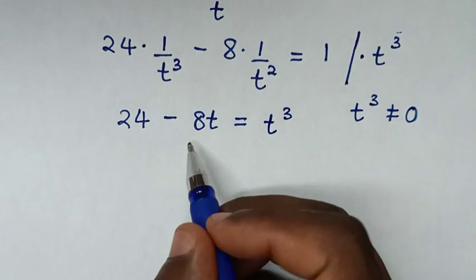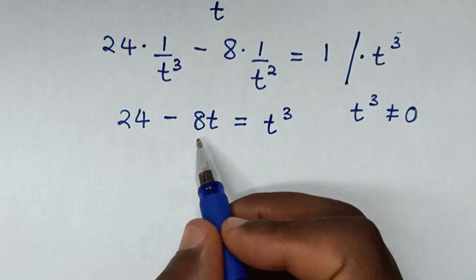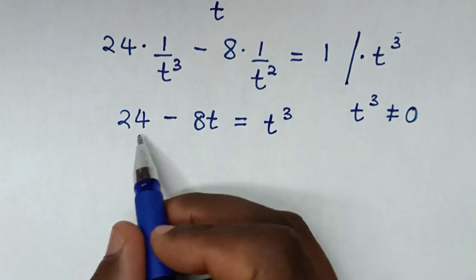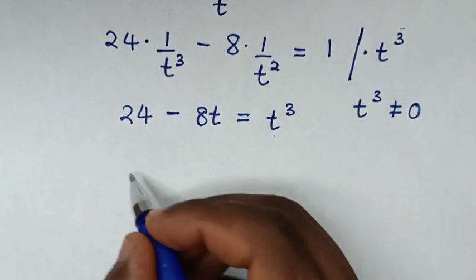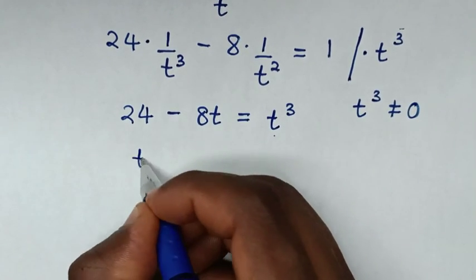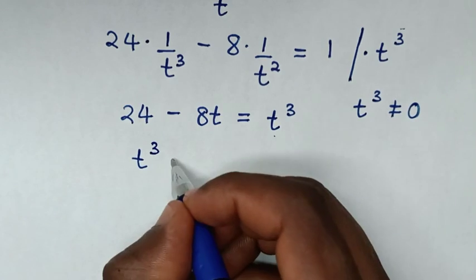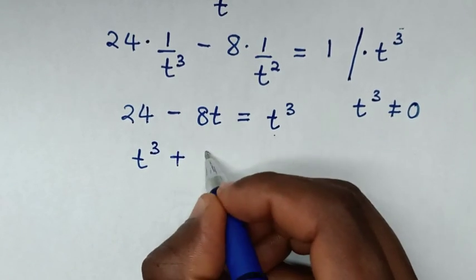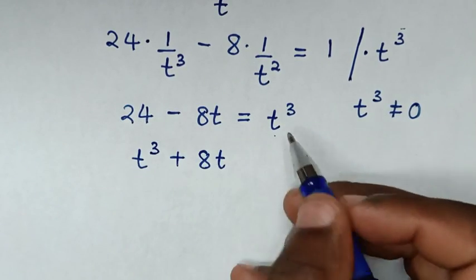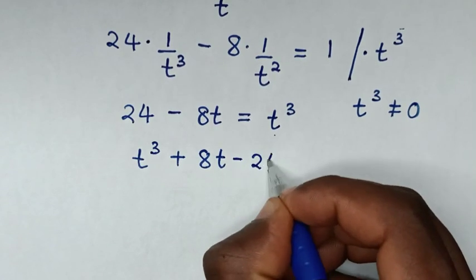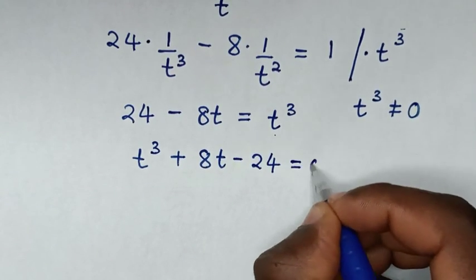We take the negative 8t to the right side and the 24 to the right side. So it will be t³ plus 8t minus 24 is equal to 0.